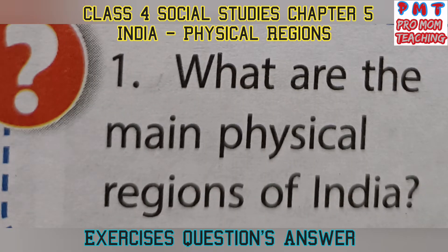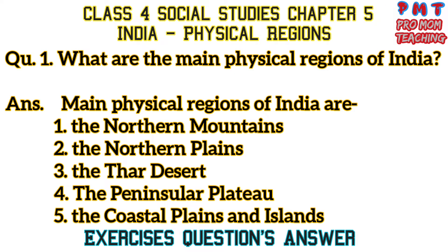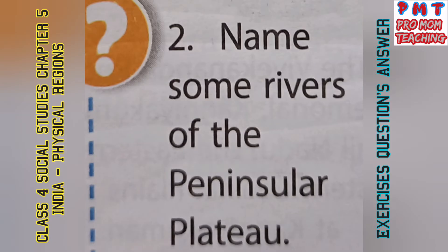Question number 1: What are the main physical regions of India? Answer: The main physical regions of India are — first, the northern mountains; second, the northern plains; third, the Thar desert; fourth, the peninsular plateau; and fifth, the coastal plains and islands.